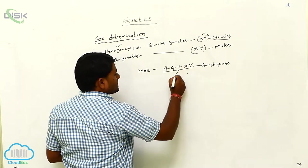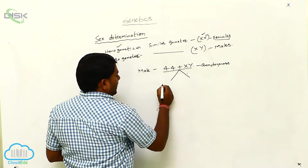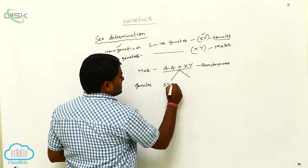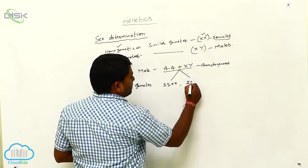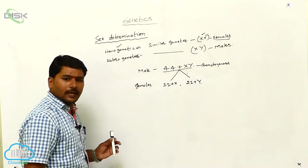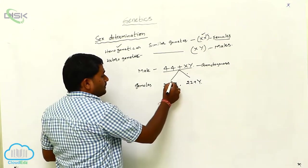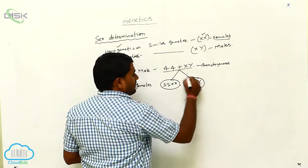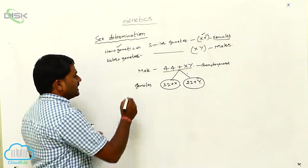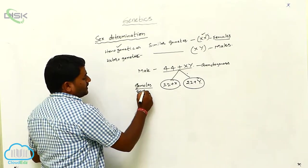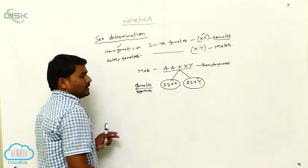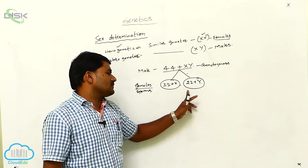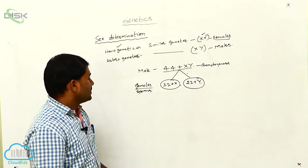The male karyotype is 44 plus XY. Looking at the gametes, 22 plus X is 50% and 22 plus Y is 50%. So 50% of the gametes have a 22 plus X karyotype and 50% of the gametes are 22 plus Y. In human beings, these gametes are sperms — 50% of sperms have 22 plus X chromosomes and 50% have 22 plus Y chromosomes.